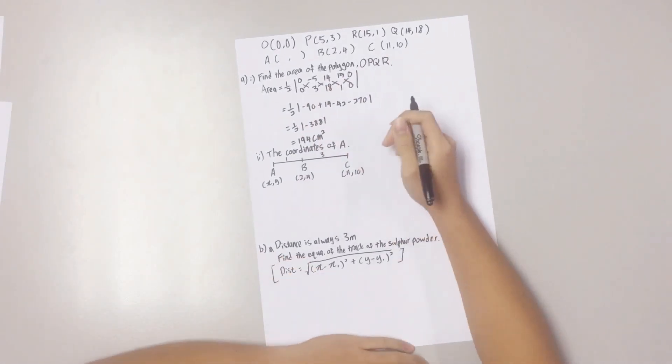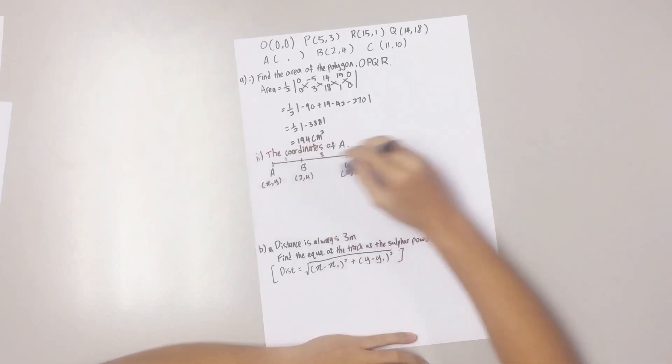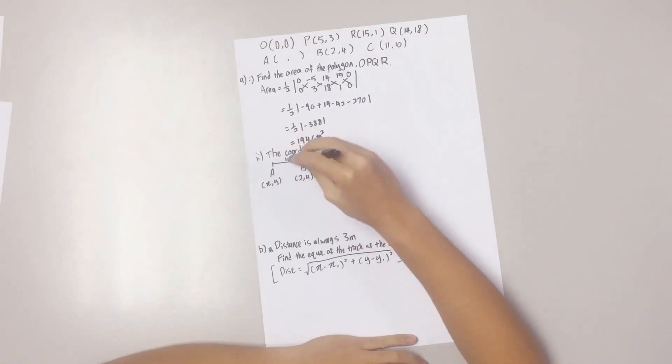Okay, now let's move on to question 2. Find the coordinates of A. It is given that A, B, and C are aligned together in a straight line. It is also given that the ratio between AB to BC is 1 to 3.